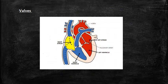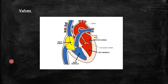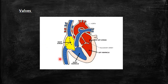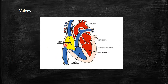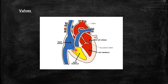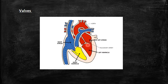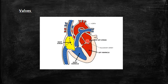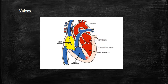There is also a valve present between each atrium and ventricle on both sides — both on the right side and the left side. These valves keep the blood flowing in one direction and prevent the backflow of blood.